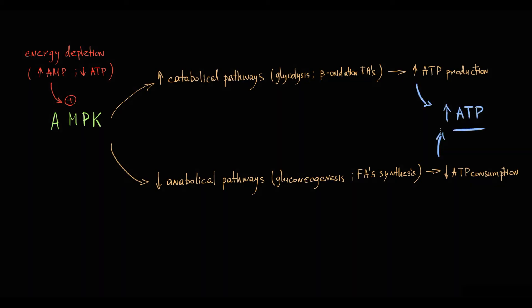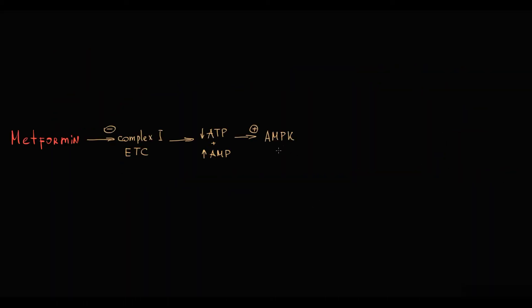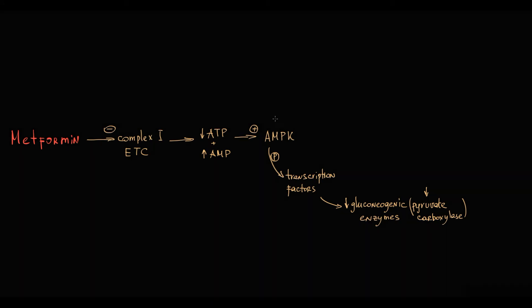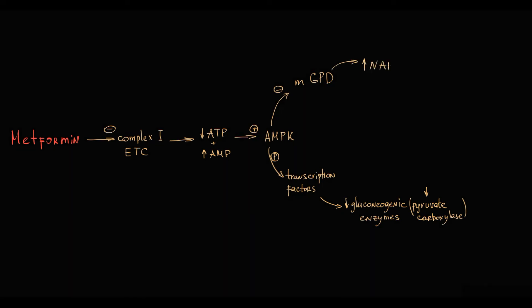How does AMPK inhibit gluconeogenesis? First, AMPK phosphorylates transcription factors, inhibiting the expression of genes that encode gluconeogenic enzymes such as pyruvate carboxylase — so metformin causes decreased pyruvate carboxylase levels. Additionally, AMPK inhibits mitochondrial glycerol-3-phosphate dehydrogenase, which causes an increase in cytosolic NADH levels.